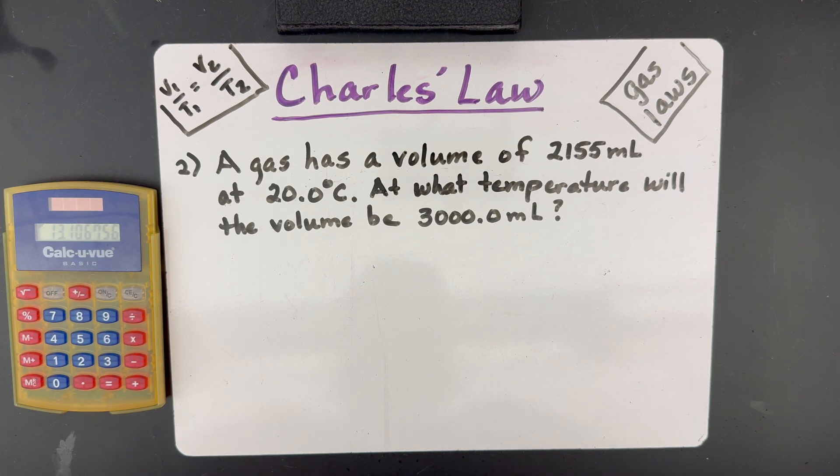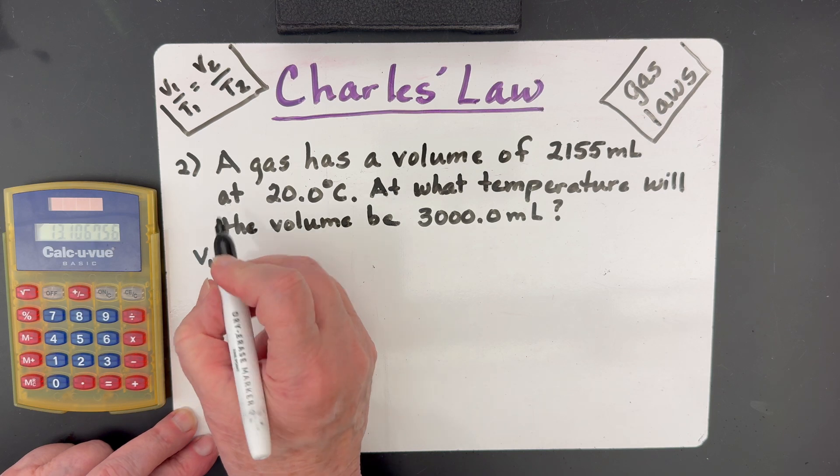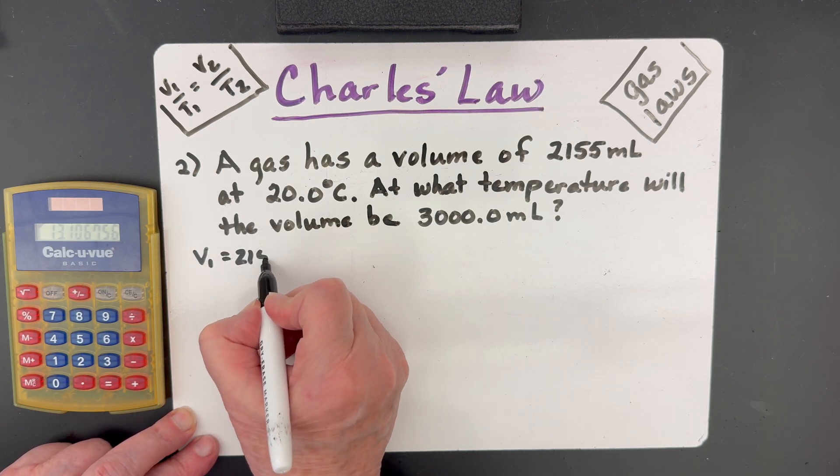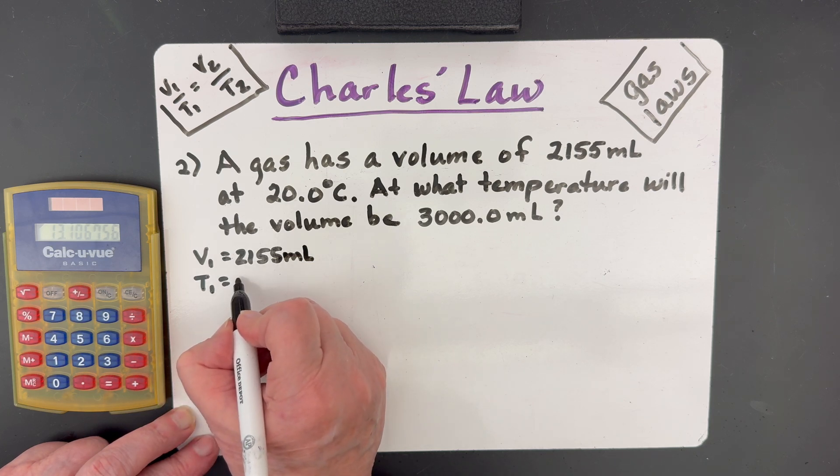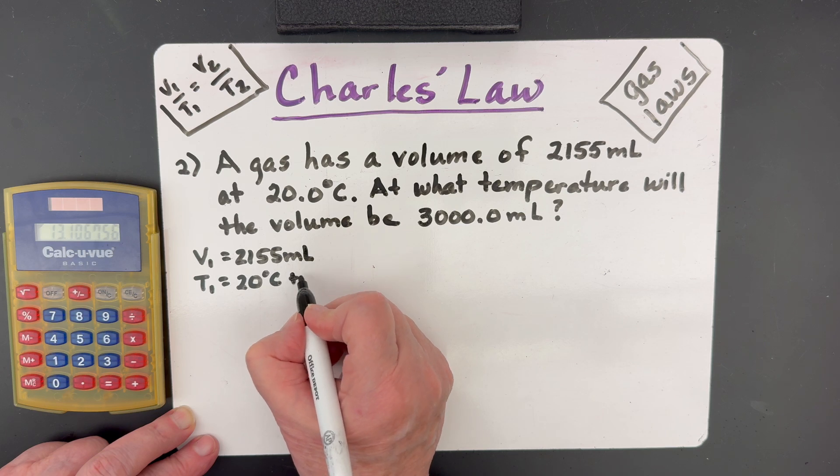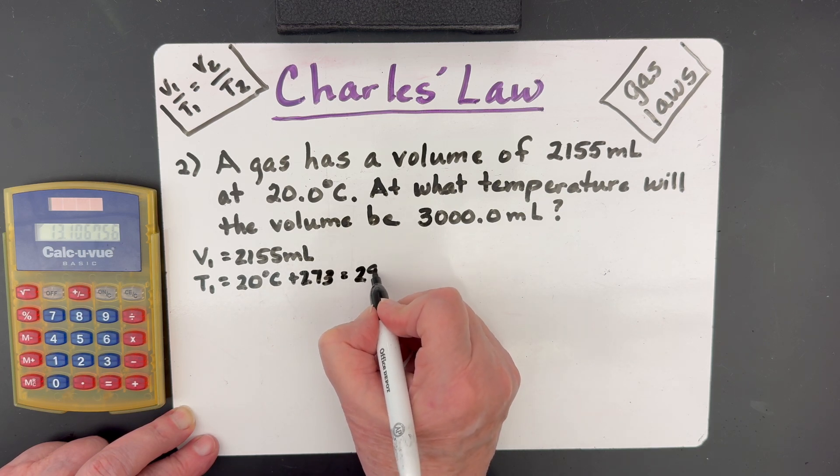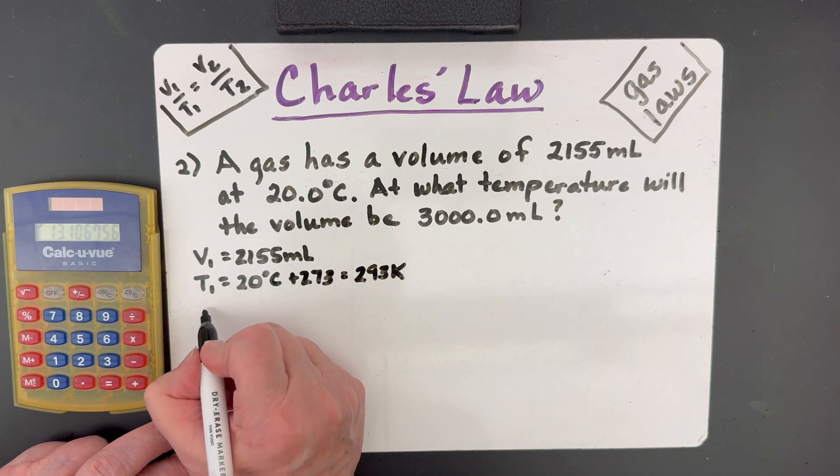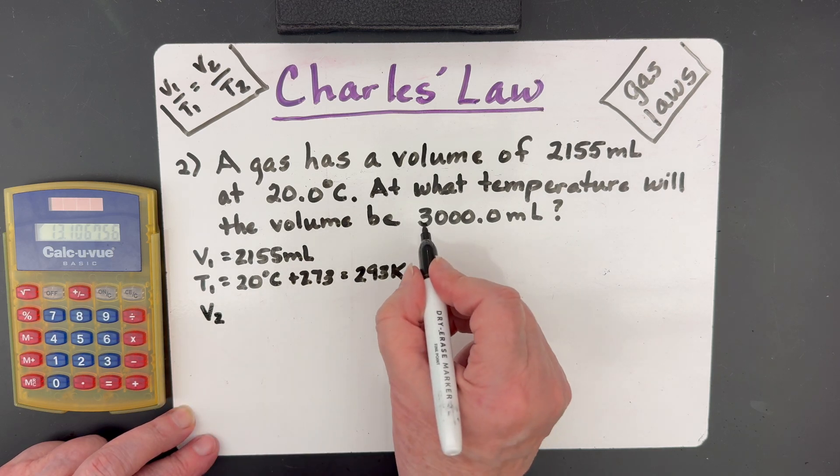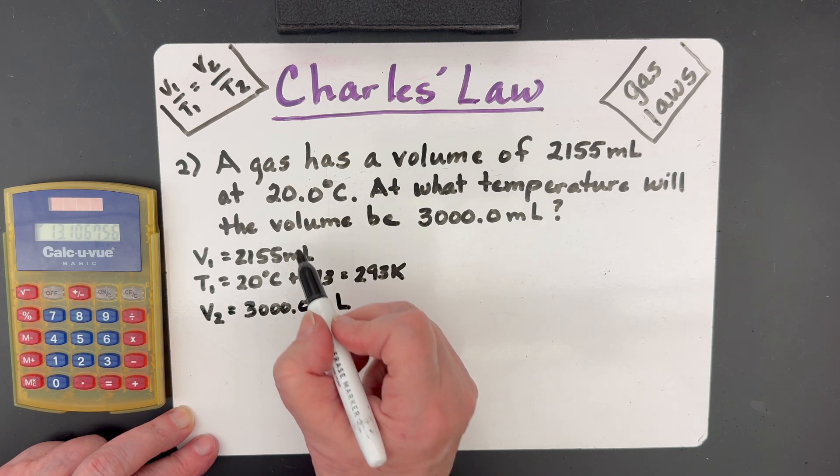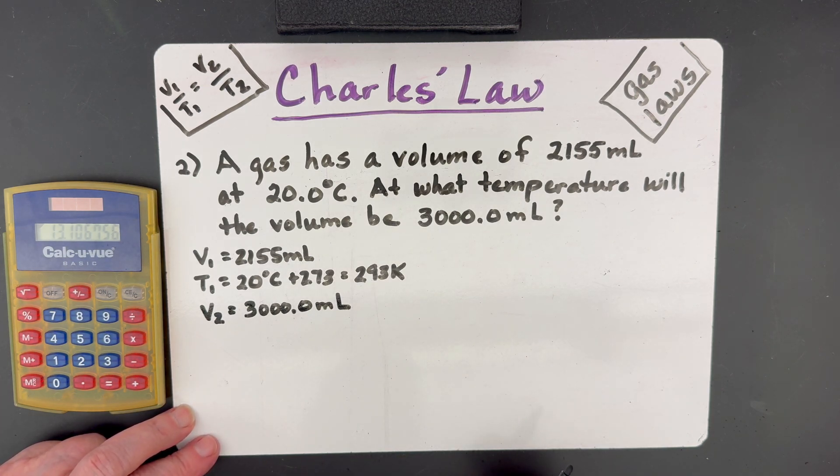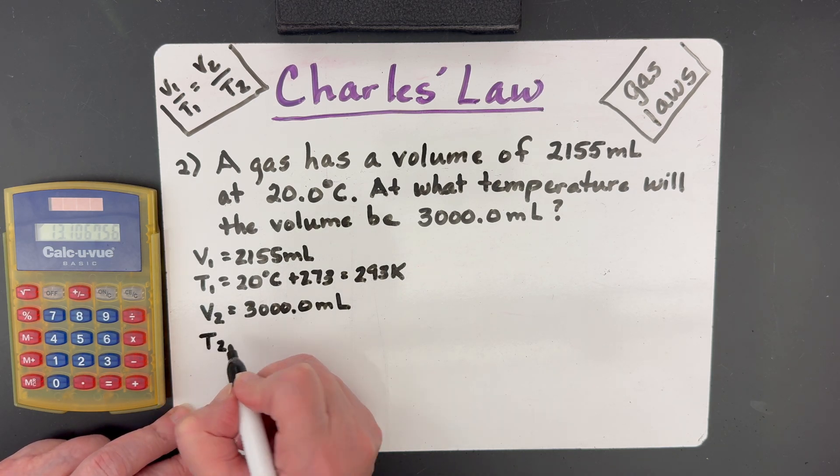Let's try a second problem. In this one, we're given a starting volume of 2155 milliliters. Our starting temperature is 20 degrees Celsius. Plus 273 will be 293 Kelvin. Our final volume is 3000 milliliters. Notice they both are in milliliters, so we don't have to convert. If one had been given to us in liters and one in milliliters, we would need to get them both into milliliters or both into liters. As long as they're the same unit, we're okay.